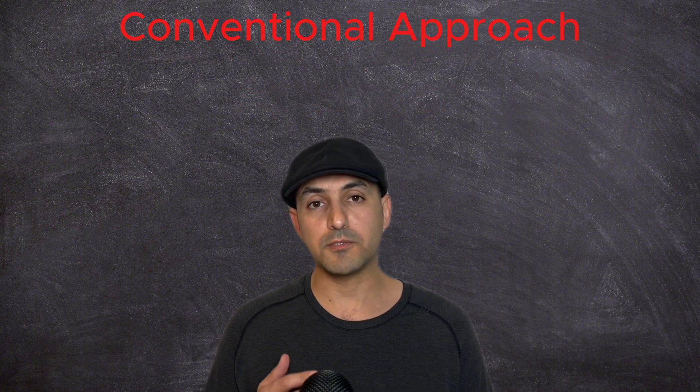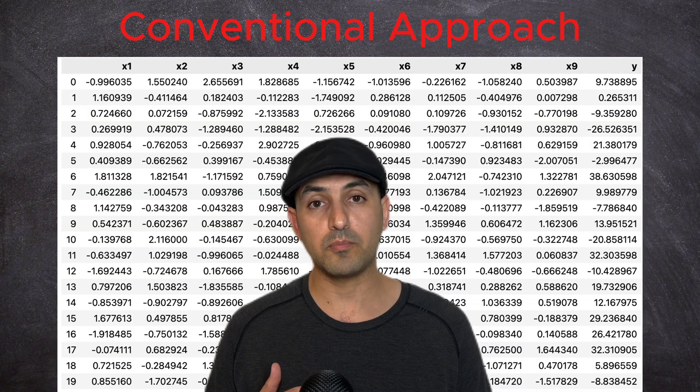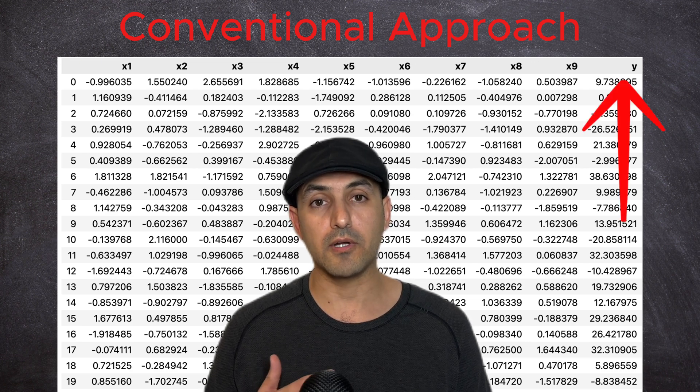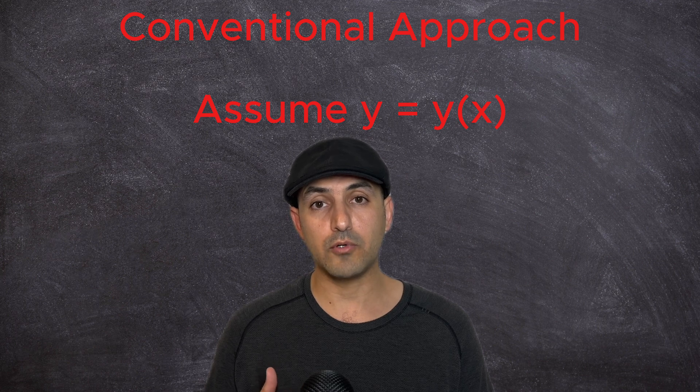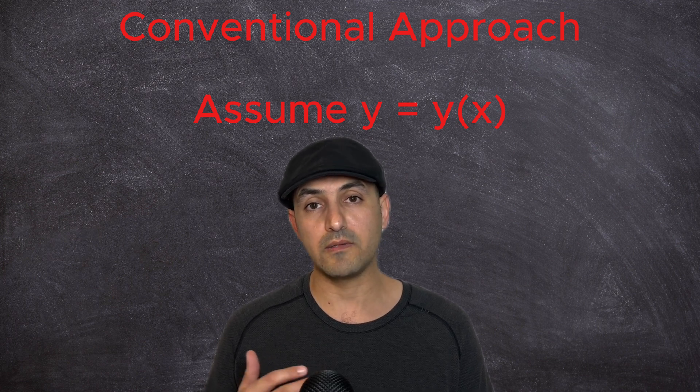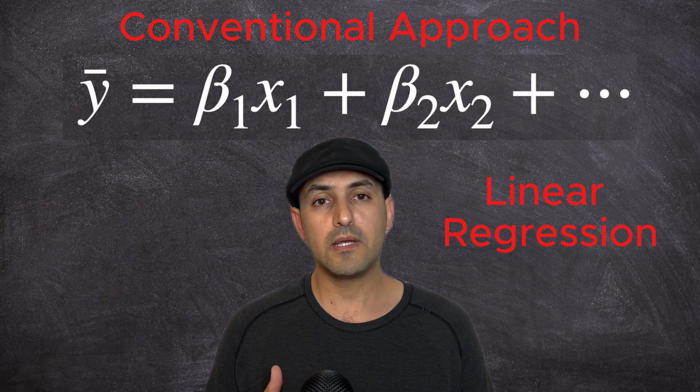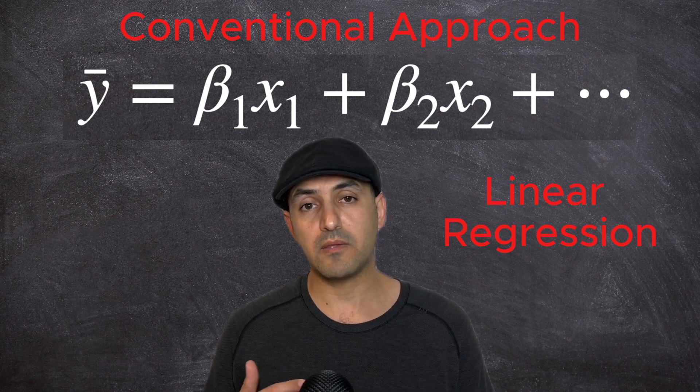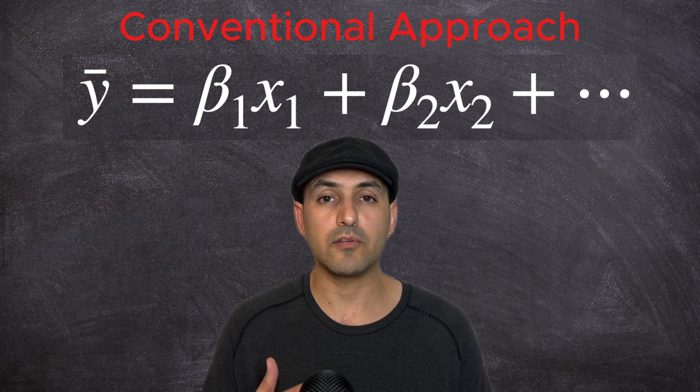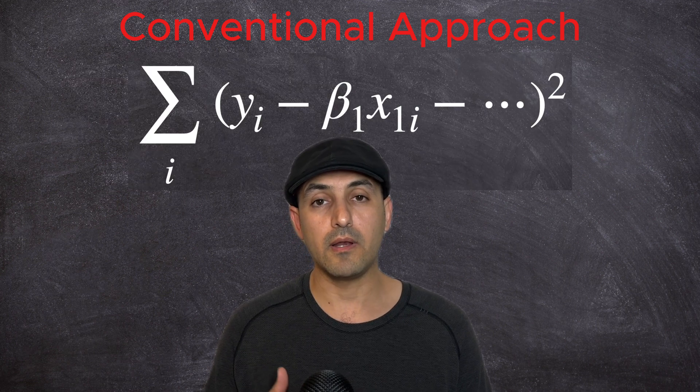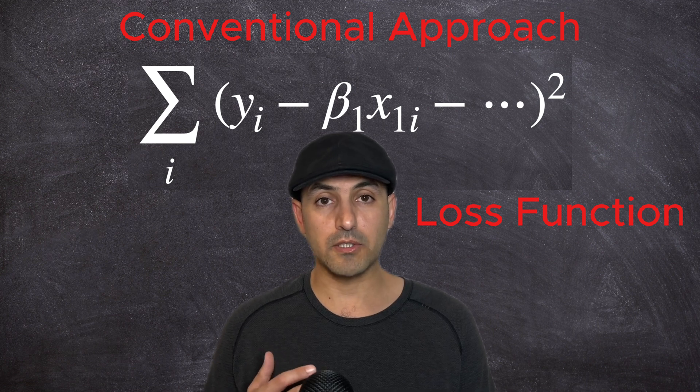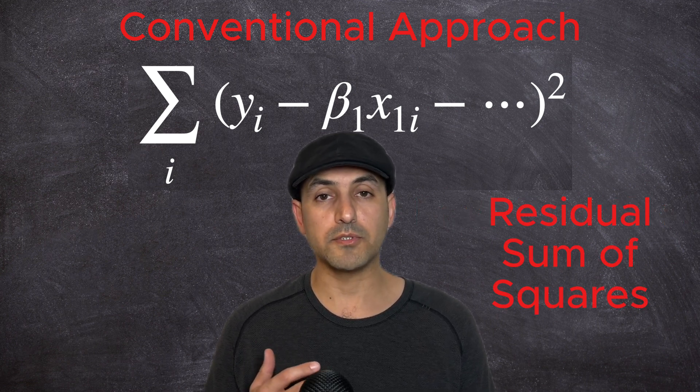Let's say I have this spreadsheet of data and would like to predict the last column y using the values in the rest of the columns. I will assume a function for the expected value of y in terms of x variables. In linear regression, this is the equation. To estimate the beta parameters, I will define a type of an error function, a loss function, and try to minimize it. Here is an example of a loss function called the residual sum of squares.